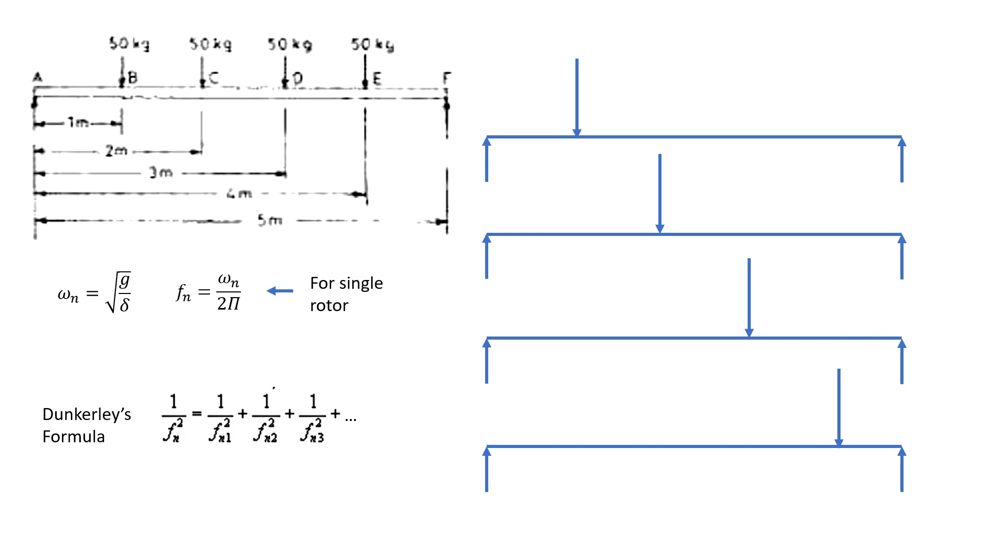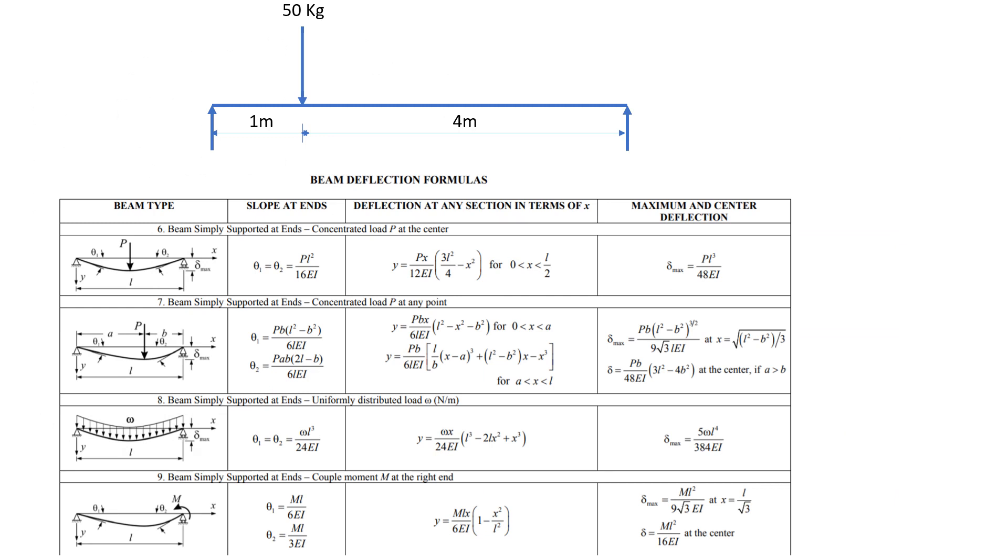To find δ, since ωₙ = √(g/δ), we need to refer to beam deflection formulas. These formulas would be provided in the exam. Look at the second row: simply supported at ends with concentrated load P at any point. This is the situation we need.